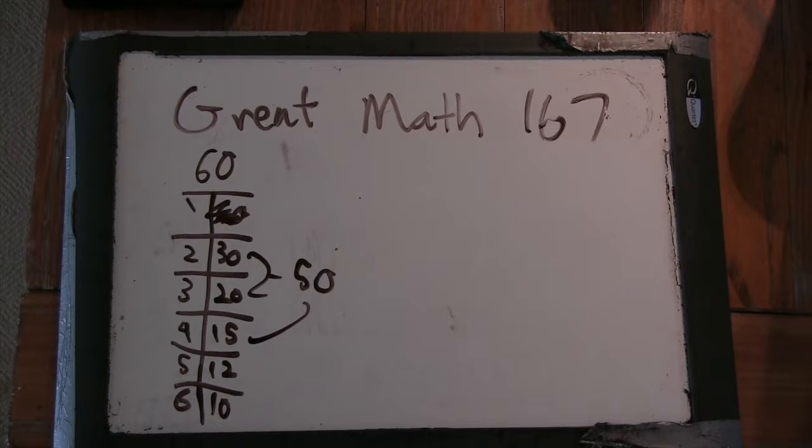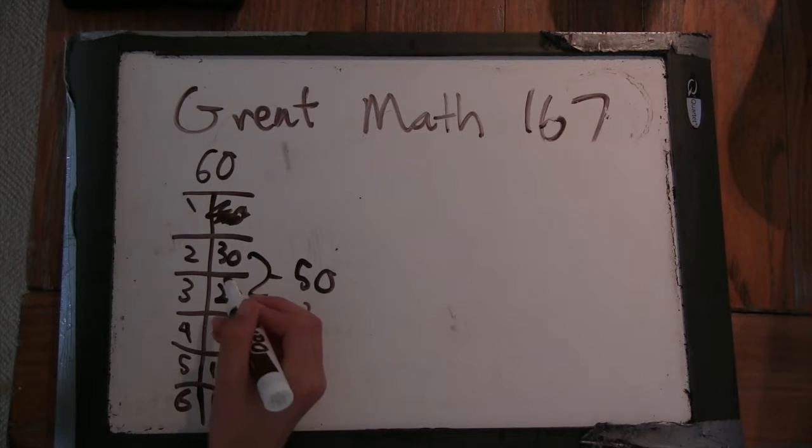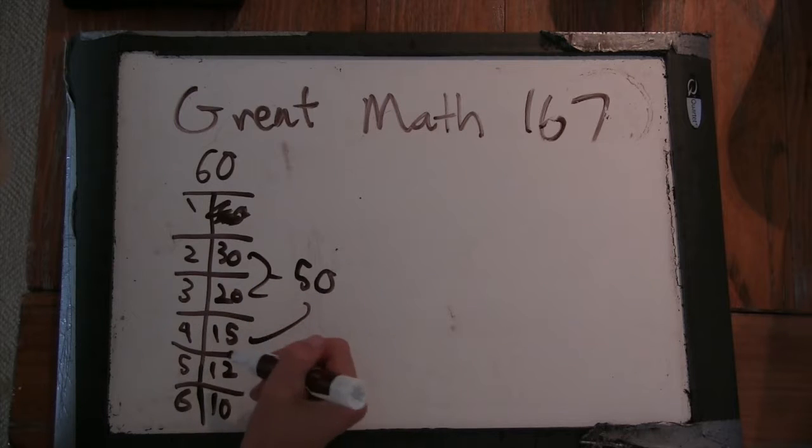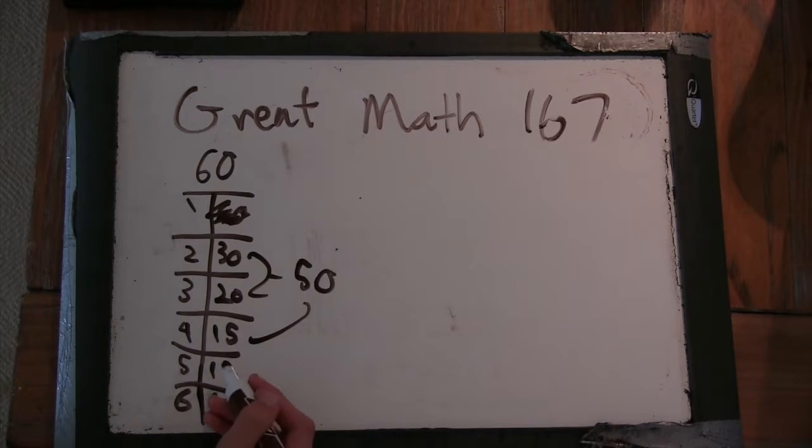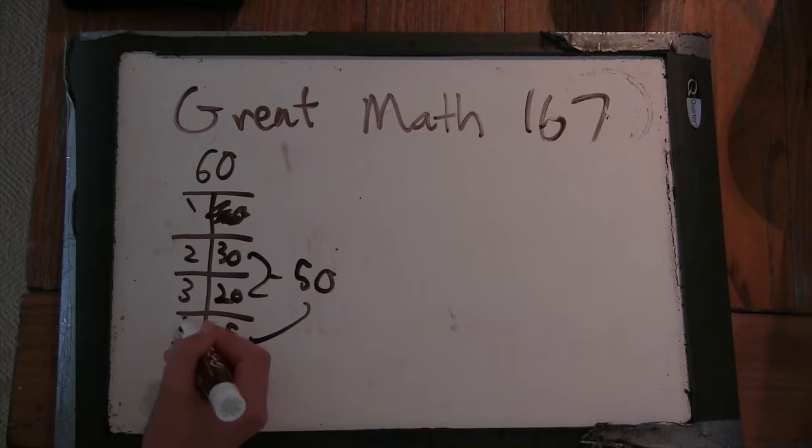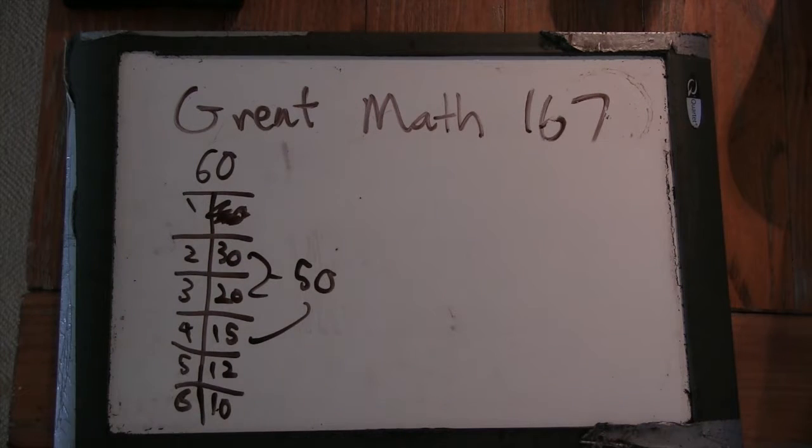Let's see. So it would be 65 already, plus 12, 77, 87, 93, 98, 102, 105, 107, 108. Okay. Alright, so sum is 108.